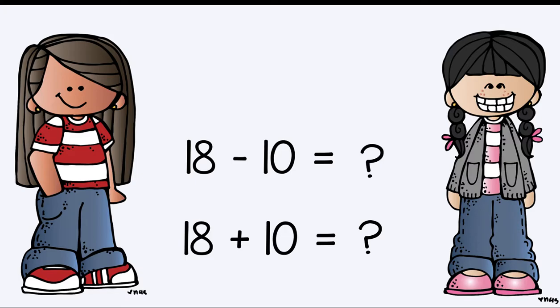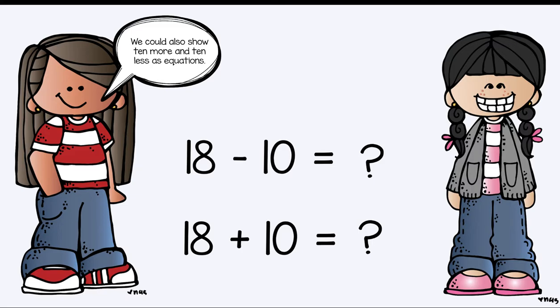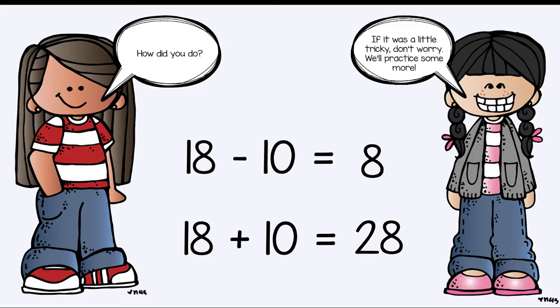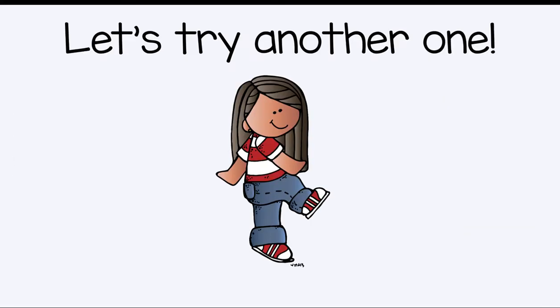That's right. 18 minus 10 is equal to what? And 18 plus 10 is equal to what? We could also show 10 more and 10 less as equations. See if you can use what we just learned to help solve these problems on your whiteboard. 18 minus 10 is 8 and 18 plus 10 is 28. How did you do? If it was a little tricky, don't worry. We're going to practice some more.